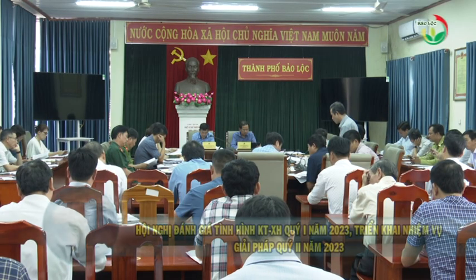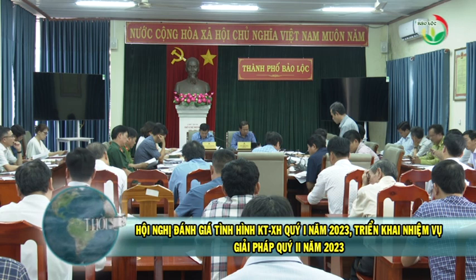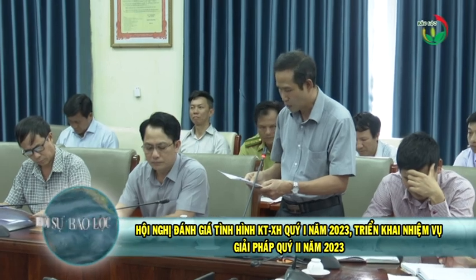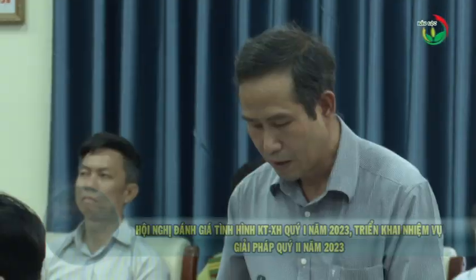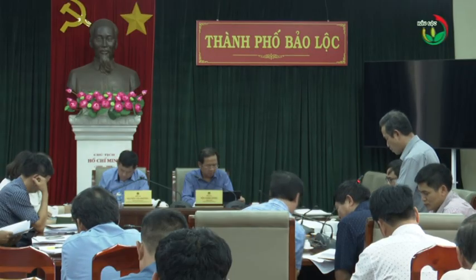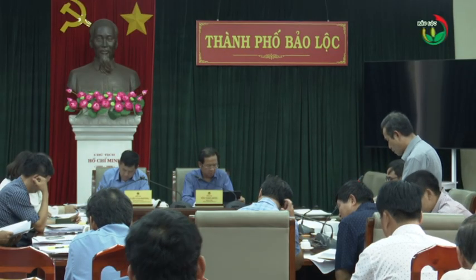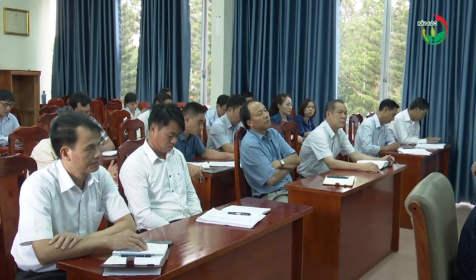Trong quý I năm 2023, Ủy ban Nhân dân thành phố Bảo Lộc đã tập trung chỉ đạo thực hiện có hiệu quả công tác quản lý nhà nước đến toàn bộ cán bộ, công chức, viên chức, người lao động, yêu cầu bắt tay ngay vào công việc, tập trung xử lý những công việc còn tồn đọng sau Tết Nguyên Đán để thúc đẩy hoạt động sản xuất kinh doanh. Tình hình sản xuất nông nghiệp đảm bảo tiến độ thời vụ, thu ngân sách đáp ứng theo kế hoạch. Chỉ số sản xuất ngành nông nghiệp, tổng mức bán lẻ hàng hóa và doanh thu dịch vụ, du lịch, thương mại, vận tải tăng trưởng khá so với cùng kỳ. Tình hình an ninh trật tự, trật tự an toàn giao thông, an toàn xã hội, quốc phòng an ninh tiếp tục được giữ vững.